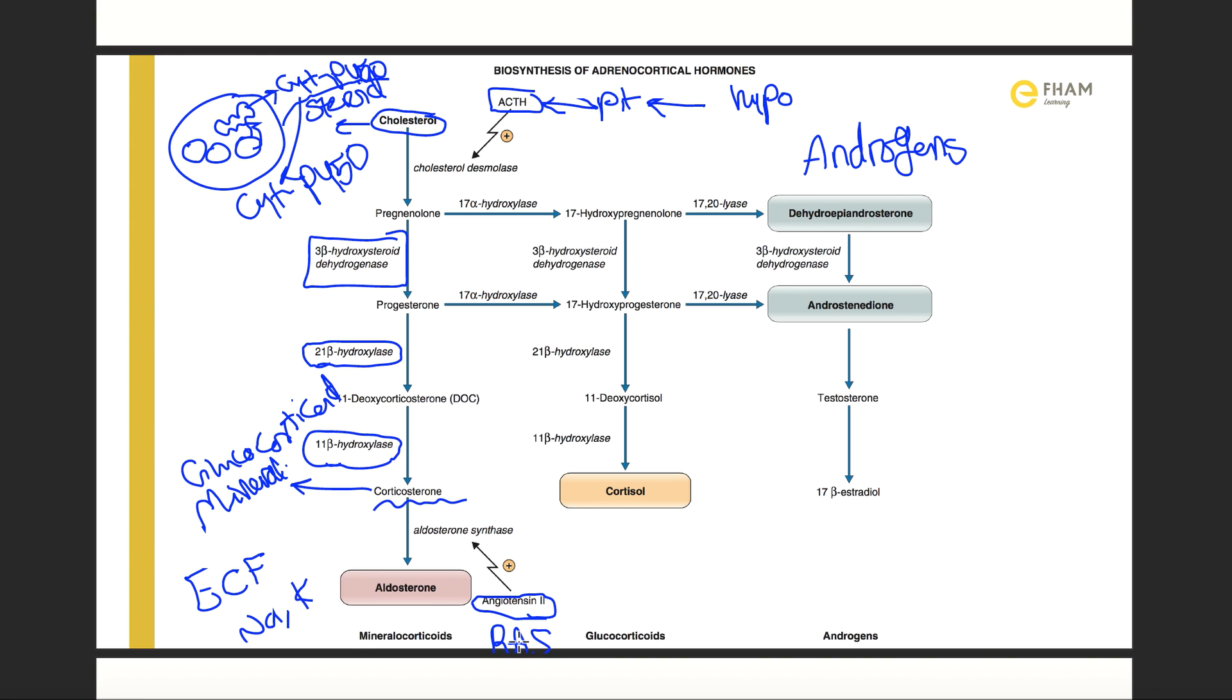This enzyme is only found in the third layer, zona glomerulosa. As it is found only in this layer, the other layers zona fasciculata and reticularis cannot synthesize aldosterone hormone as they do not have aldosterone synthase.